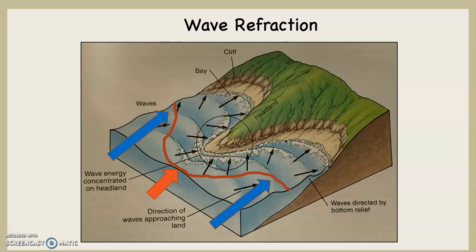Which means all of those things are going to begin to occur, as you can see in the diagram — the wave is going to begin to slow down and so on. But where the two blue arrows are, the wave continues on full speed ahead. That causes the wrapping around the protruding headland. This is called a point break in surf lingo.